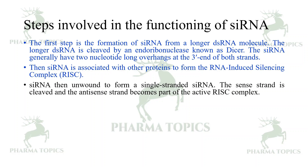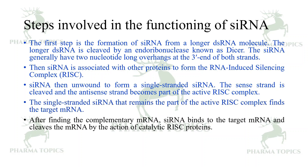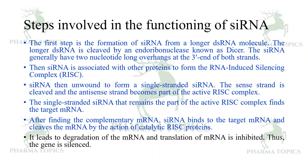The siRNA is unwound to form a single-stranded molecule. The sense strand is cleaved, and the antisense strand becomes part of the active RISC complex. This single-stranded siRNA guides RISC to form a complex with the complementary target mRNA. After finding the complementary mRNA, the siRNA binds to the target mRNA, and the catalytic RISC proteins cleave it.